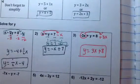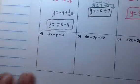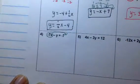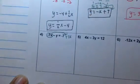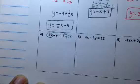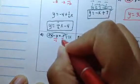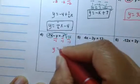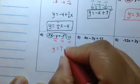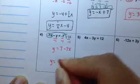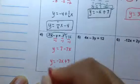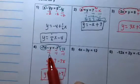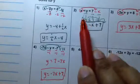Number 4 is a little different because the number in front of Y is negative. Same concept: circle the X, move it, change the sign. This is a positive 7X. Because the sign in front of the Y is negative 1, you have to divide by negative 1. Two negatives give you a positive. A negative and a positive will leave you with a negative. So we write Y equals negative 7X plus 7. The key thing is: if it's negative 1 you have to divide by negative 1; if it's positive 1 you don't have to divide.